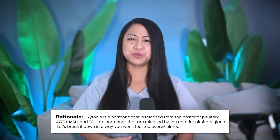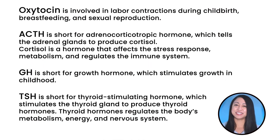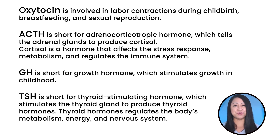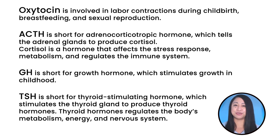Oxytocin is involved in labor contractions during childbirth, breastfeeding, and sexual reproduction. ACTH is short for adrenocorticotrophic hormone, which tells the adrenal glands to produce cortisol. Cortisol is a hormone that affects the stress response, metabolism, and regulates the immune system. GH is short for growth hormone, which stimulates growth in childhood. TSH is short for thyroid stimulating hormone, which stimulates the thyroid gland to produce thyroid hormones. Thyroid hormones regulate the body's metabolism, energy, and nervous system.